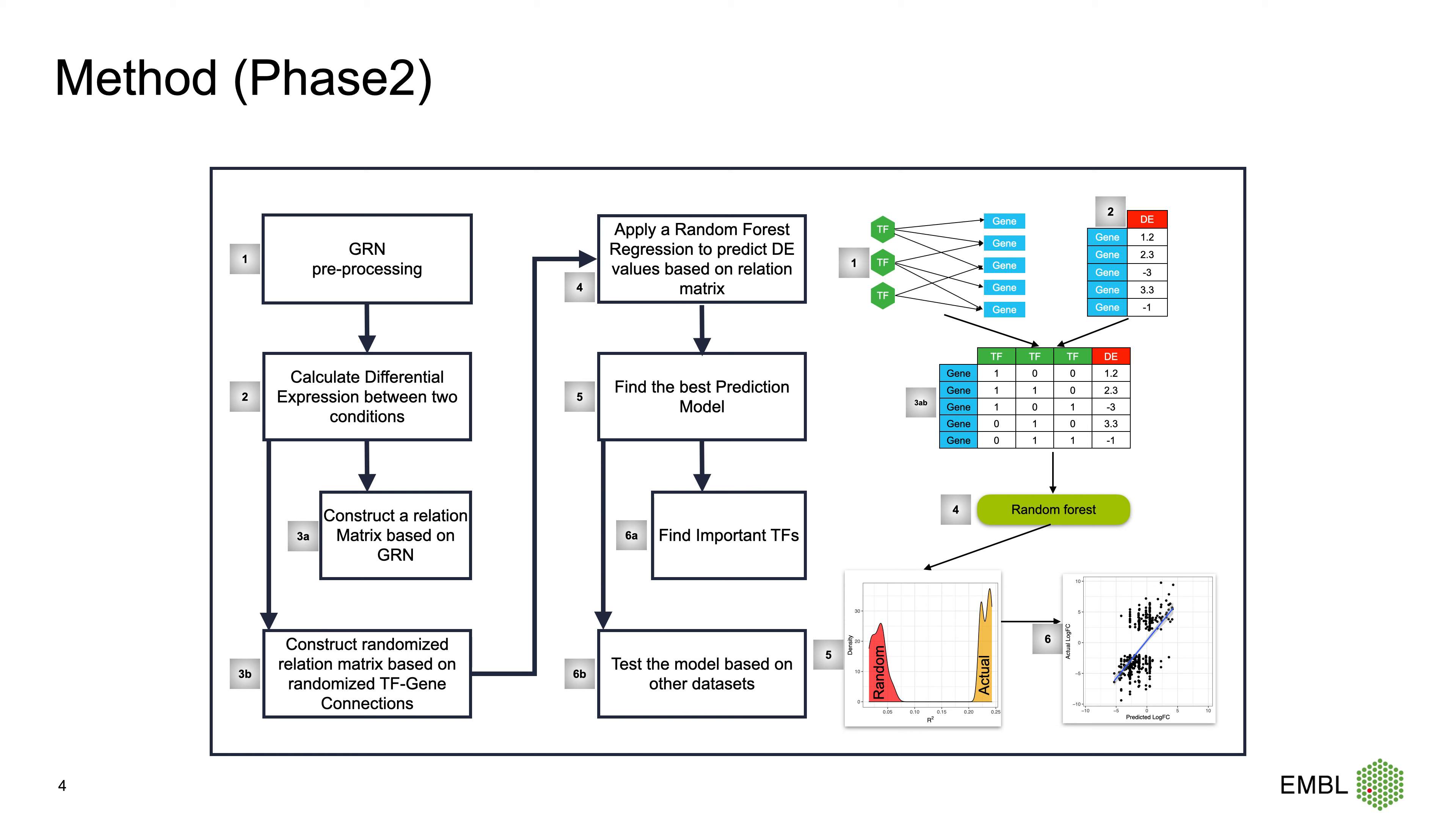Next, we apply a random forest regression on actual and random simulation matrices in order to predict differential expression values. After optimizing some of the parameters from GRN construction, we use this model to compute important TFs. Finally, we are testing our model with a completely independent test dataset.